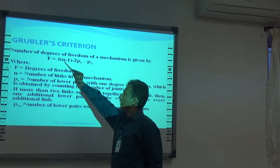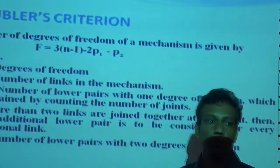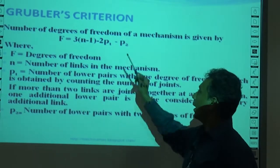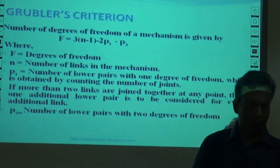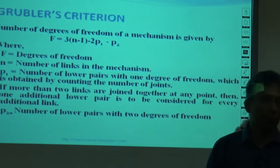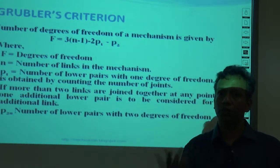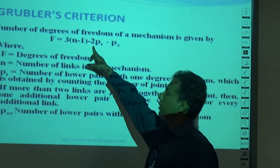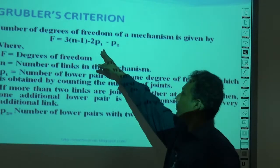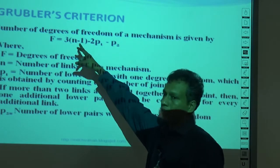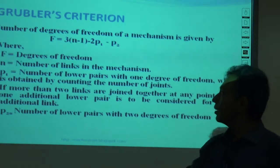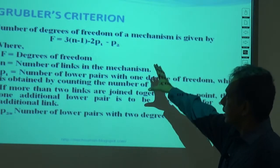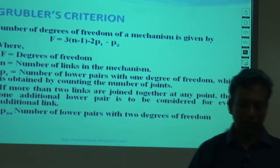This is illustrated in the Grübler's equation. When n is the number of links, three times n gives the total degrees of freedom. We subtract two times P1 (pairs with one degree of freedom) and P2 (pairs with two degrees of freedom). The minus three accounts for the three degrees of freedom lost when one link is fixed. So the equation is: DOF = 3(n − 1) − 2P1 − P2. This is the equation used to find the degrees of freedom for a mechanism.